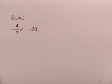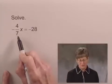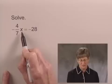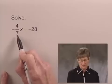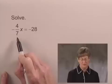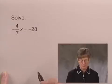We'll solve the equation negative 4 sevenths times x equals negative 28. When we have an equation where there's a fraction multiplied times the variable, the best procedure is to multiply by the reciprocal of that fraction to get the variable alone.